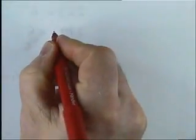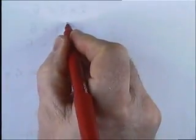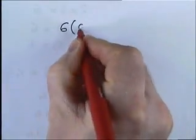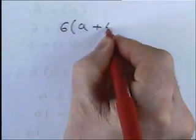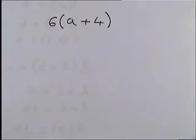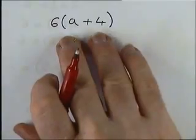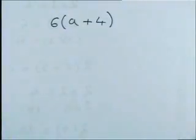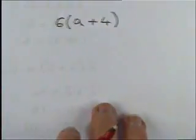Okay. So, we're now going to move on to do the same idea with algebra. What you will call algebra. So, here's our first question. We've got 6 lots of a plus 4. So, the number inside the bracket is a plus 4. And we need 6 of those.